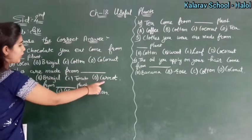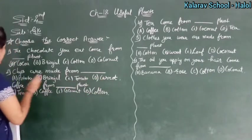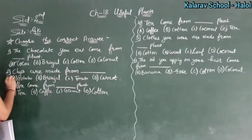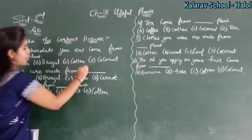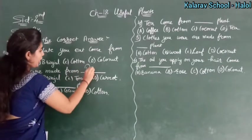Chips are made from which ingredient? The options are: potato, brinjal, tomato, carrot. Chips are made from potato, so here you write potato.